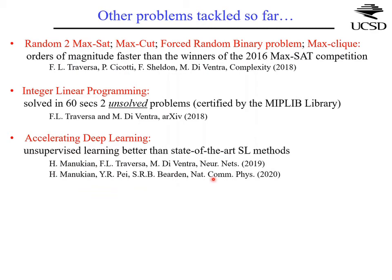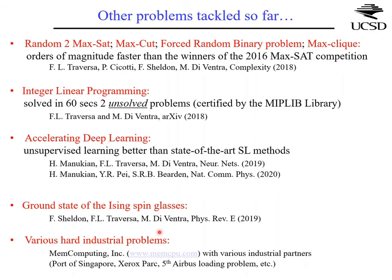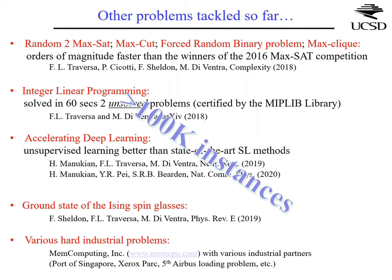We also used MemComputing to accelerate deep learning, finding we can do unsupervised learning better than state-of-the-art supervised methods. One result already on arXiv is the solution of the fifth Airbus quantum computing loading problem, which was posed for hardware quantum computers but was solved by the company in linear time to scale. This is an integer linear programming problem and can already be deployed in industry. We now have hundreds of thousands of instances of tough problems showing a huge advantage.